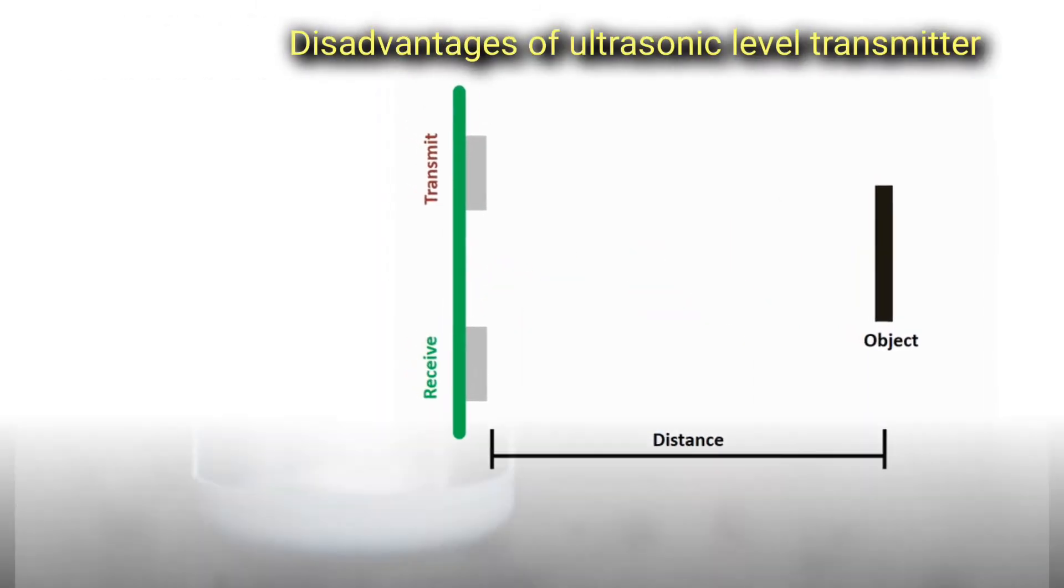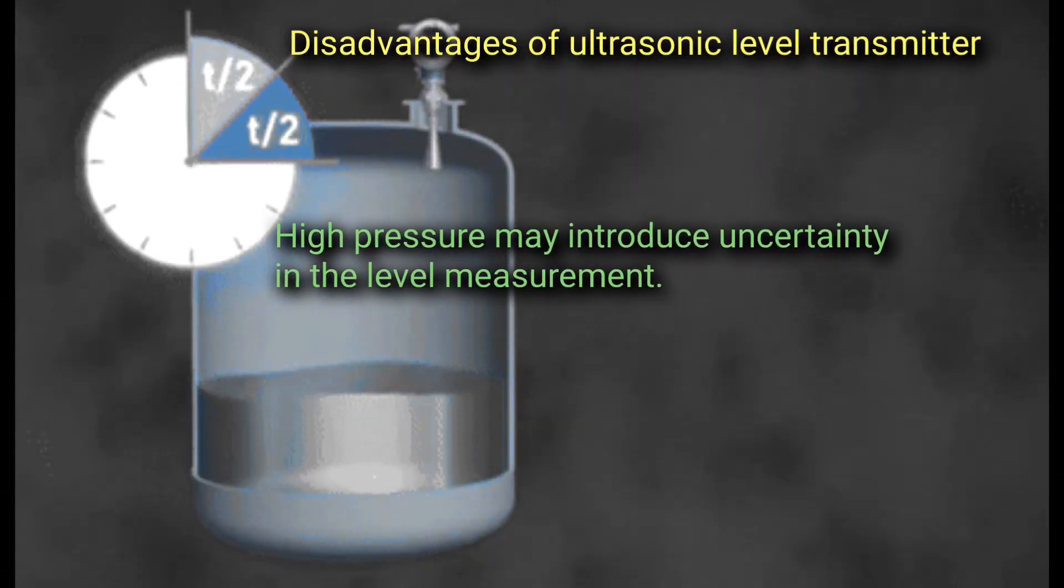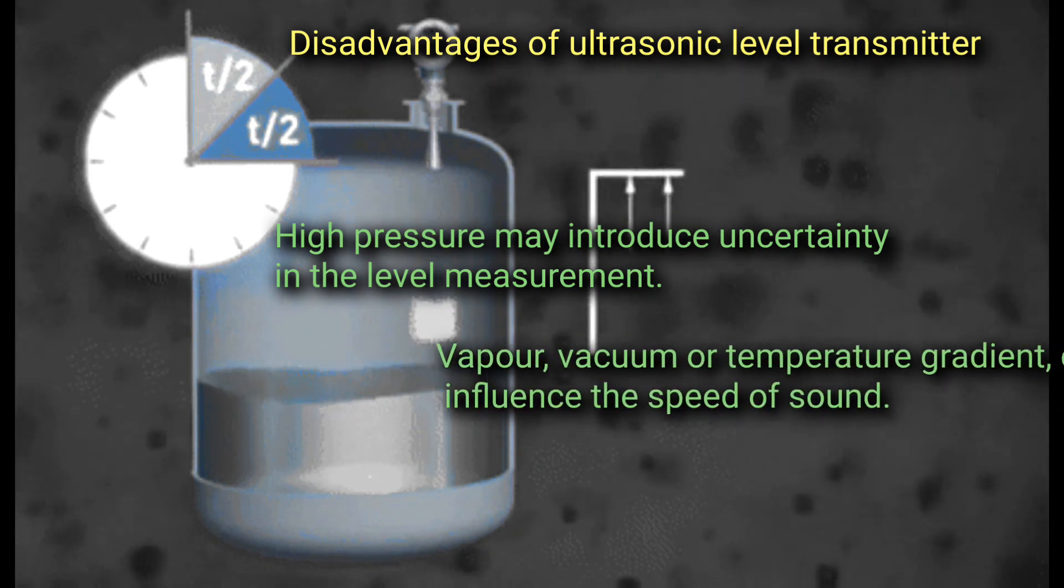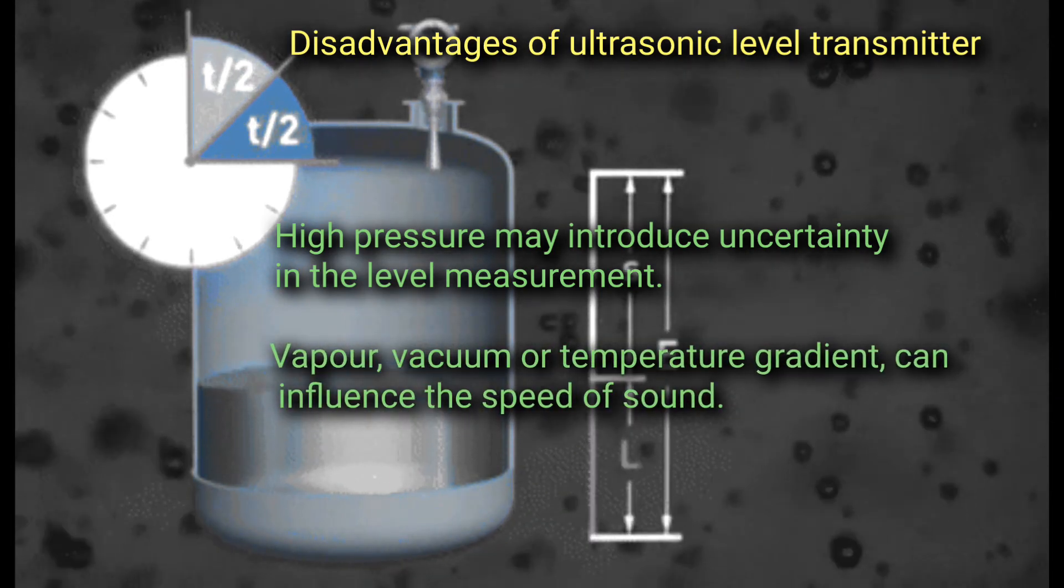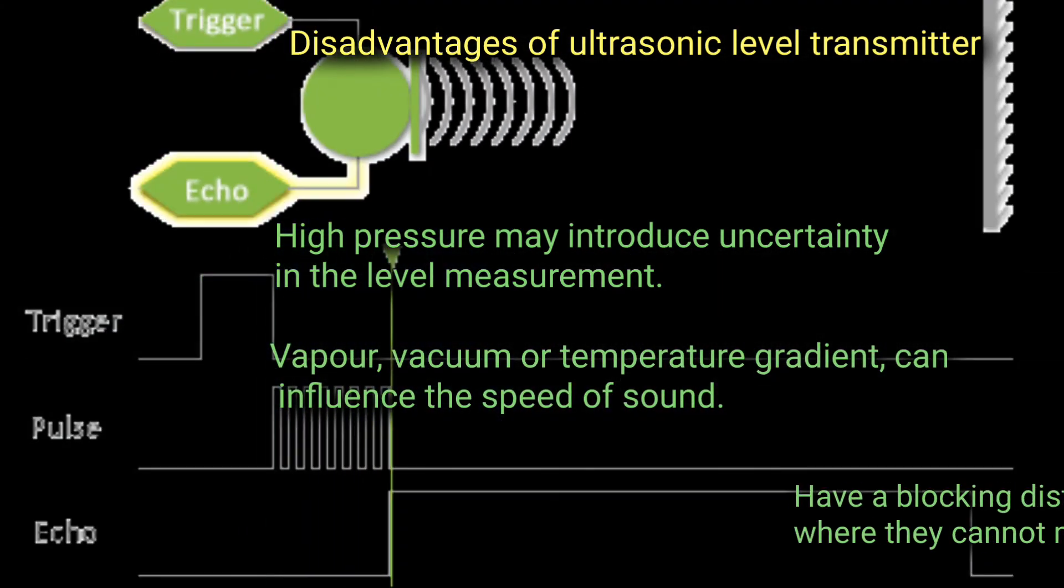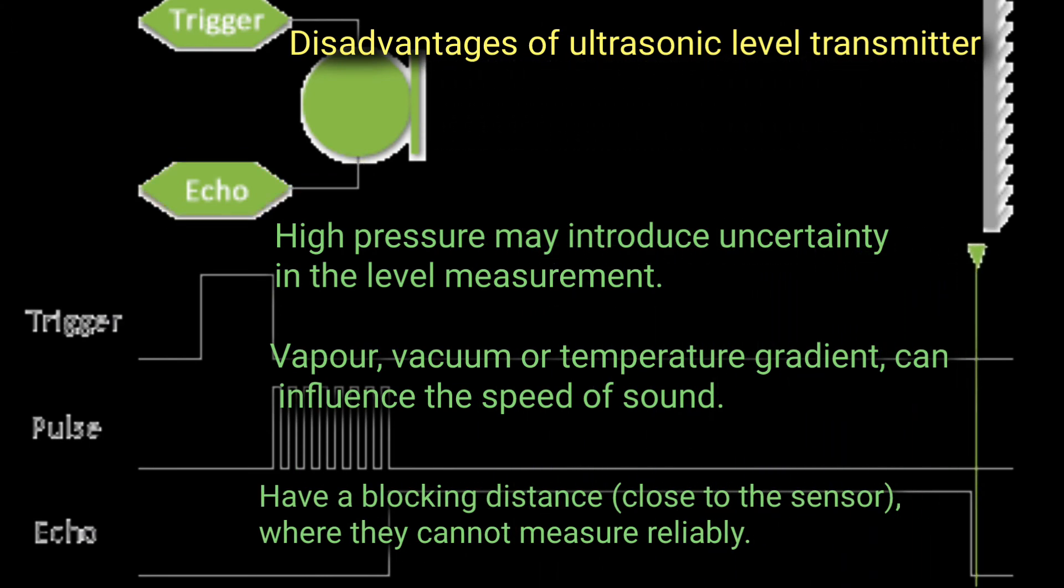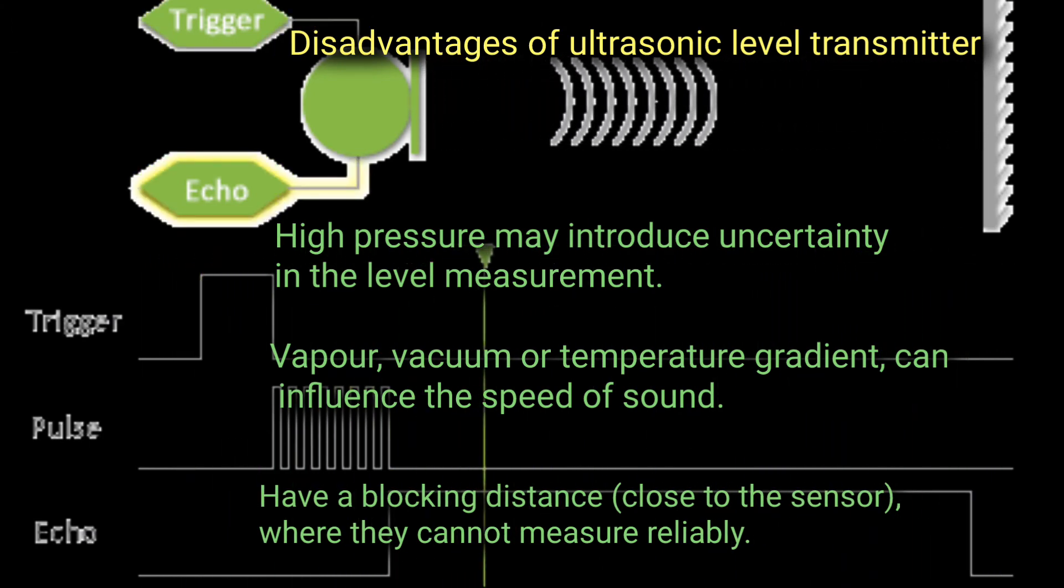Disadvantages of ultrasonic level transmitter: High pressure may introduce uncertainty in the level measurements. Vapor, vacuum, or temperature gradient can influence the speed of sound. Vapors have a blocking distance close to the sensor where they cannot measure reliably.